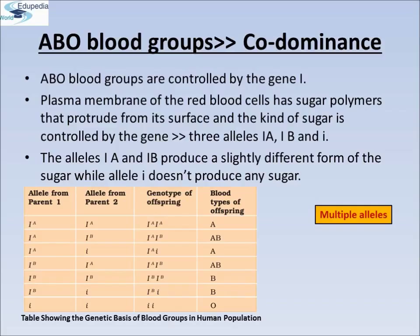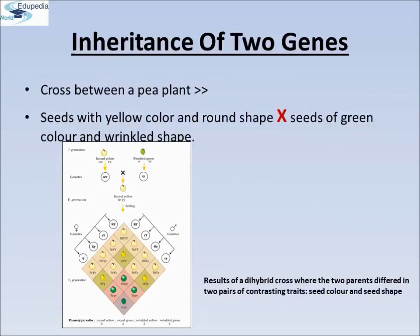Hence, red blood cells have both A and B types of sugar. Since there are three different alleles, there are six different combinations of these three alleles possible, and a total of six different genotypes for the human ABO blood group. Multiple alleles are also present in the ABO blood group. Here you can see that there are more than two — that is three — alleles governing the same character. Since in an individual only two alleles can be present, multiple alleles can be found only when population studies are made. So this is a good example of multiple alleles also.